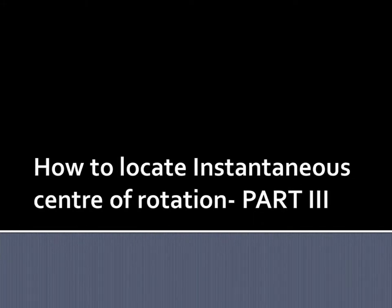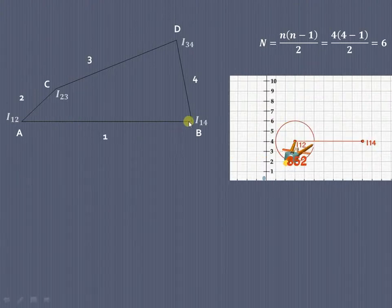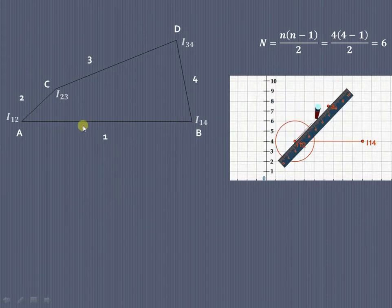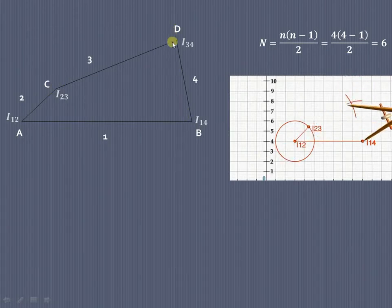Let us start to understand how to locate the instantaneous center of rotation in the case of a four-bar mechanism. Here we have this four-bar mechanism in which AP is the fixed link, AC is the input link, CD is the intermediate link, and DP (or PD) is the output link.